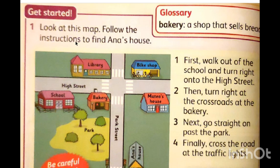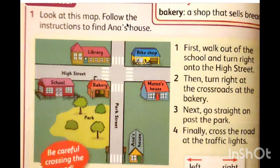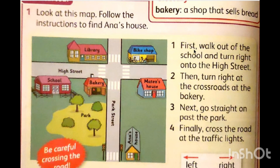Look at this map. Follow the instructions to find Anna's house. Where is Anna's house? We don't know, but we will follow this instruction in order to know how to arrive at Anna's house. Number one: first, walk out of the school — here is the school. Walk out of the school gate and turn right. Then go on to the High Street. Number two: then turn right at the crossroad — this is a crossroad, because four roads cross together.